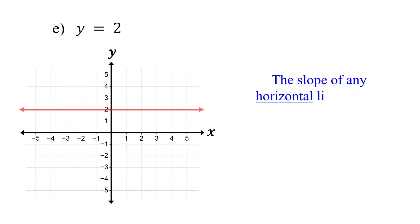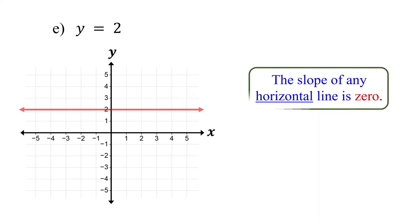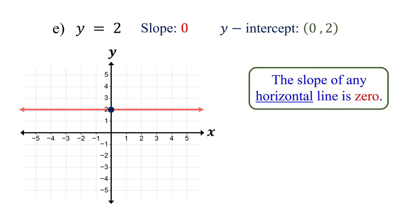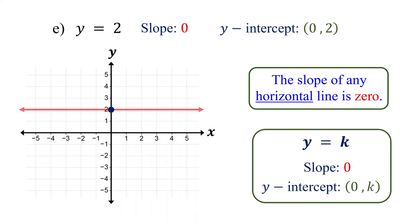The slope of any horizontal line is 0 because there is no vertical change. So the slope here is 0. Since the line crosses the y-axis at 2, the y-intercept is (0, 2). In general, if an equation is in the form y = k, where k is a constant, then the slope is 0 and the y-intercept is (0, k).